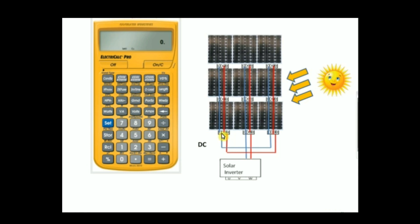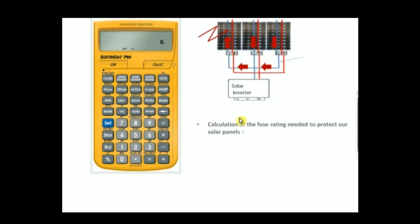Today we're going to see the calculation of the fuse rating needed to protect our solar panels. Here we have three parallel chains, and each chain delivers 8.26 amps. If we have a short circuit in one of these three chains, this will generate a return current in that chain, and the value of this current will be the sum of the other two parallel chains, so it's going to be 16.52 amps.